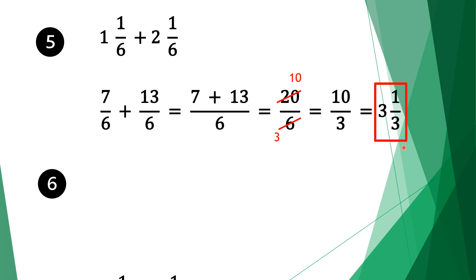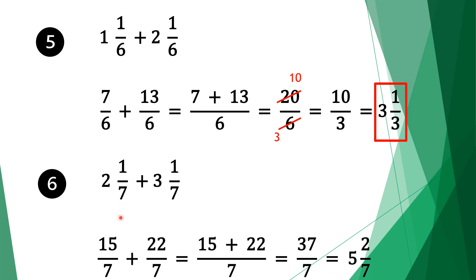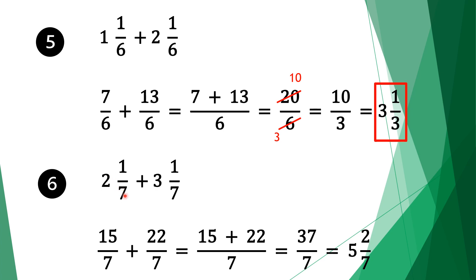Moving on to equation 6. We have 2 and 1 sevenths plus 3 and 1 sevenths. Again we convert our mixed fractions into normal fractions. 7 times 2 is 14, plus 1 is 15. Bring the denominator 7 and the plus sign. Do the same for the second fraction.